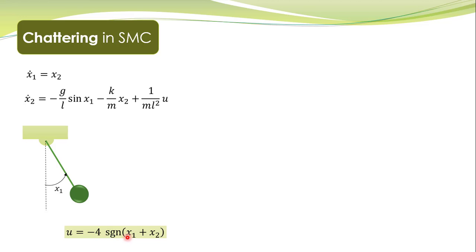As soon as trajectories reach the sliding surface — that is, as soon as s is equal to zero — the control becomes zero instantaneously. As soon as trajectories reach the sliding surface, the control action must become instantaneously equal to zero. However, this control has to be realized by some kind of actuator. What are actuators?